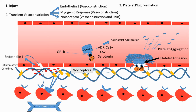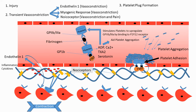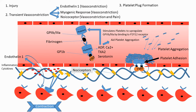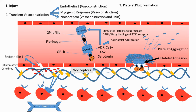ADP also binds onto the ADP receptor on platelets known as the P2Y12 receptor. Once stimulated, this receptor causes platelets to upregulate another receptor called GP2b3a. This GP2b3a receptor is then used by platelets to bind onto each other — they do so using fibrinogen in the middle. So platelets are bound to each other via GP2b3a with fibrinogen bridging them, enabling platelet aggregation.